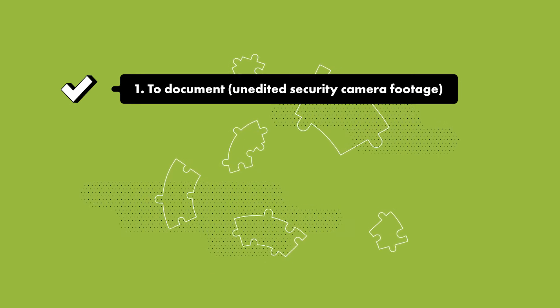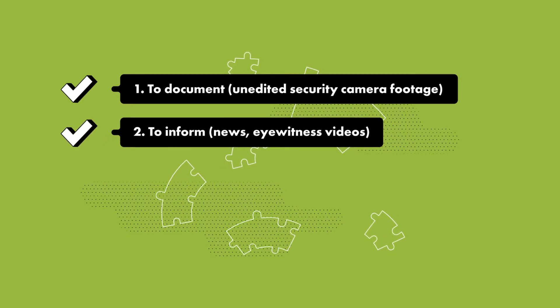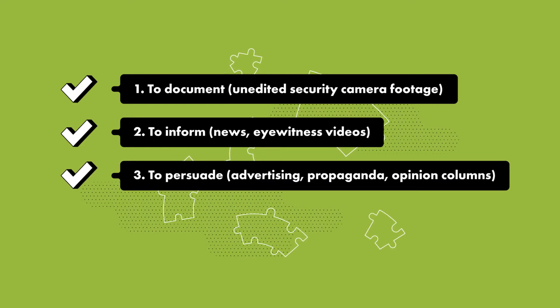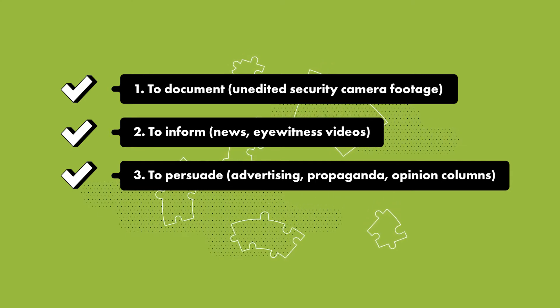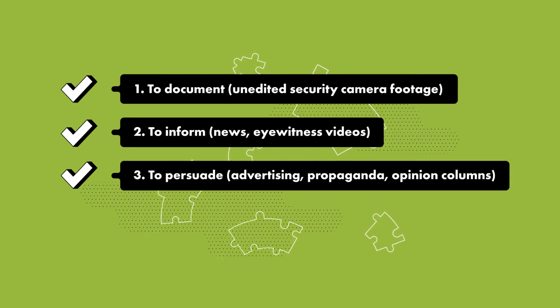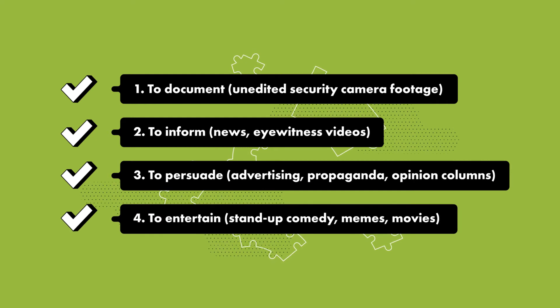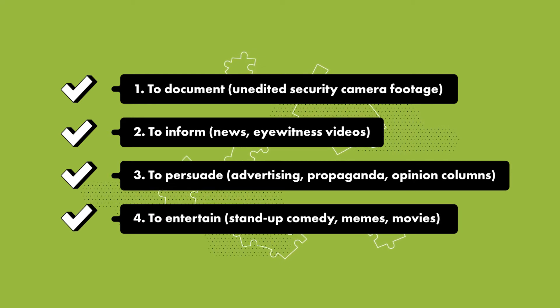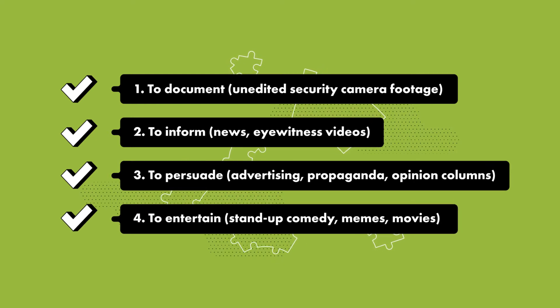There are a lot of ways content creators can use facts and opinions for different purposes. For example, to document, such as publishing a transcript of a meeting; to inform, as in a news article that reports on an event; to persuade, like an advertisement that wants to sell you something, an opinion column that aims at changing or strengthening a belief, or propaganda that is trying to provoke you to fight for or against something. Another purpose for creating content is to entertain, like a movie or a meme. Let's talk about some of these categories in more depth.